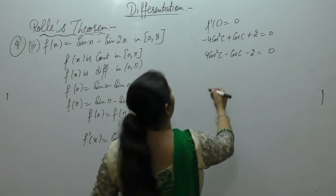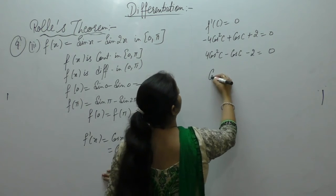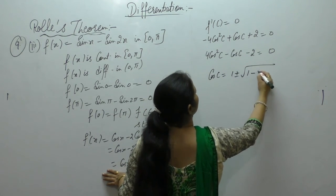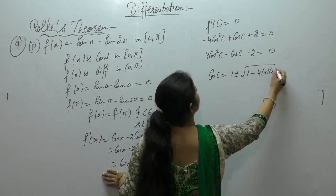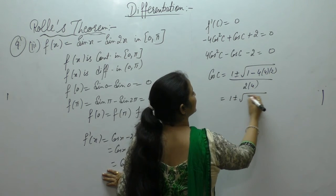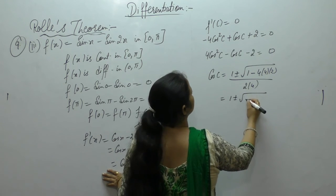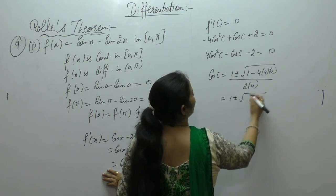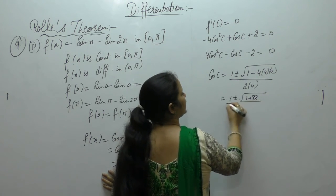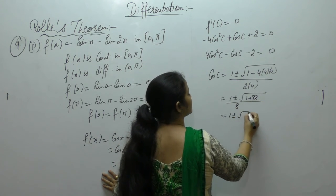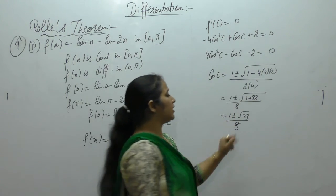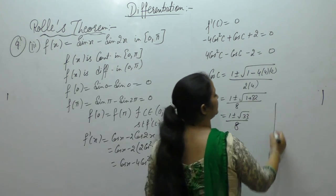Applying the quadratic formula with a=4, b=-1, c=-2: cos c = (1 ± √(1 + 32))/8 = (1 ± √33)/8. Computing √33 ≈ 5.74, so cos c = (1 ± 5.74)/8.